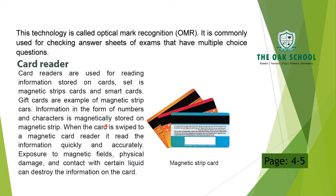When the card is swiped through a magnetic card reader, it reads the information quickly and accurately. However, exposure to magnetic fields, physical damage, and contact with certain liquids can destroy the information on the card.